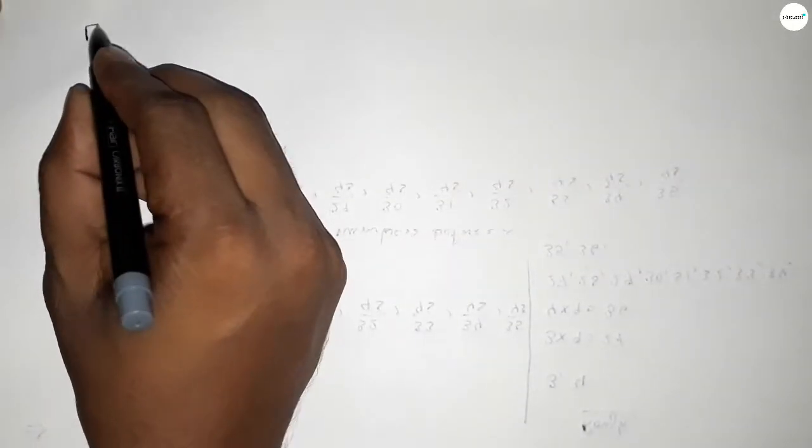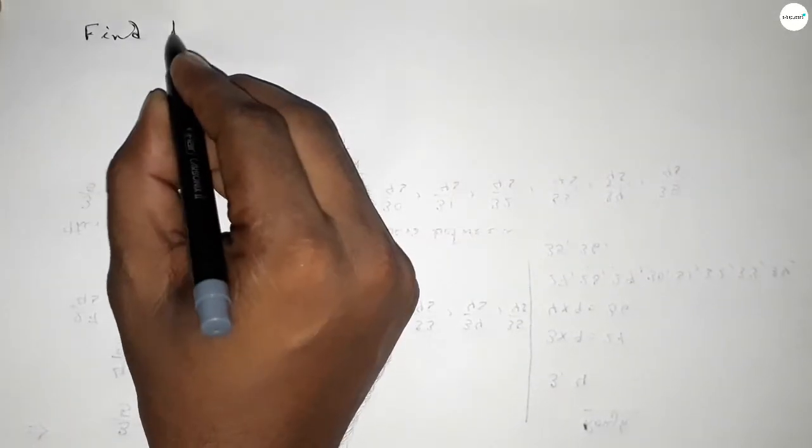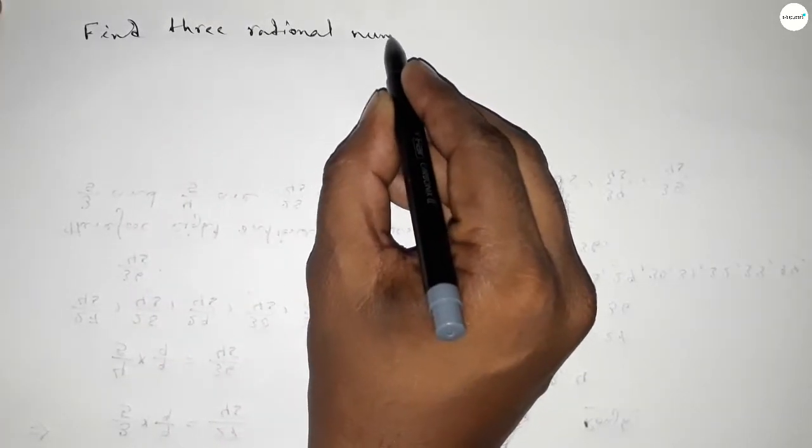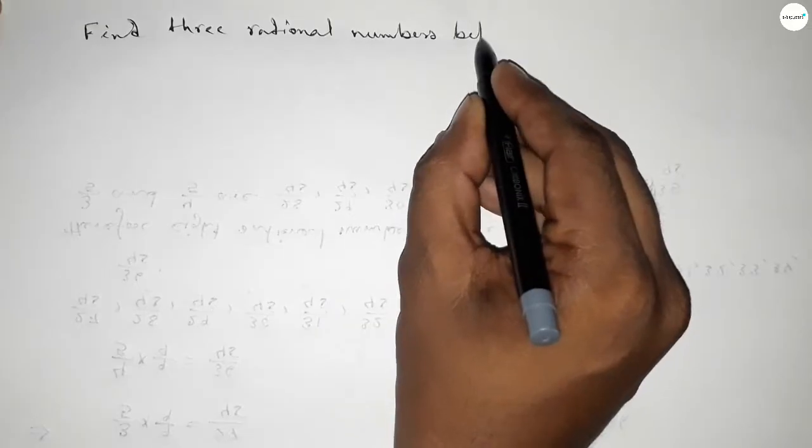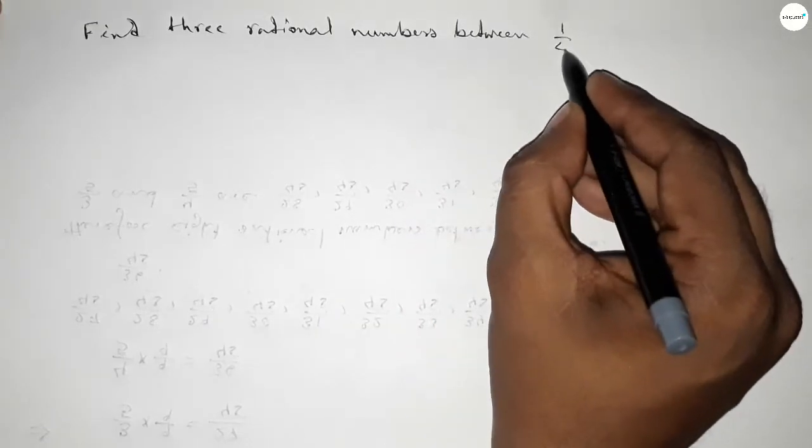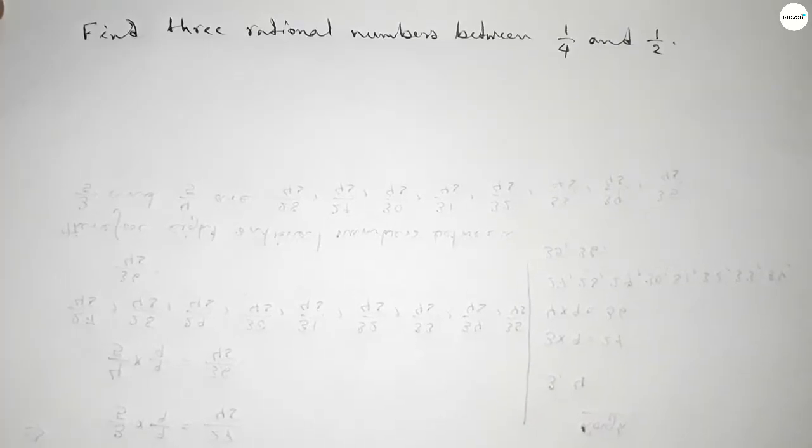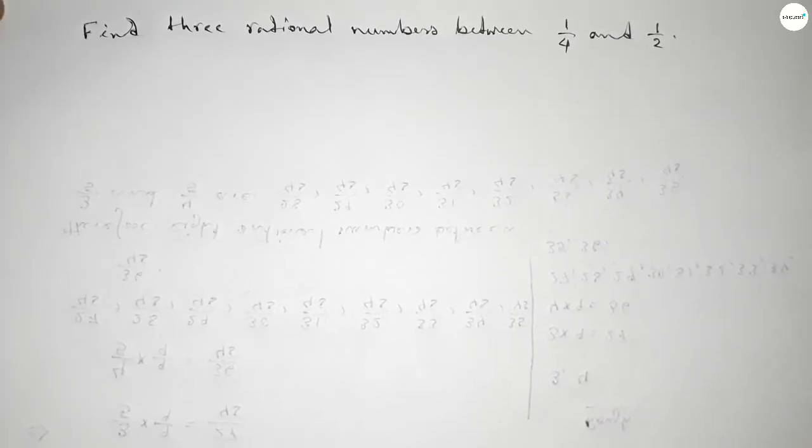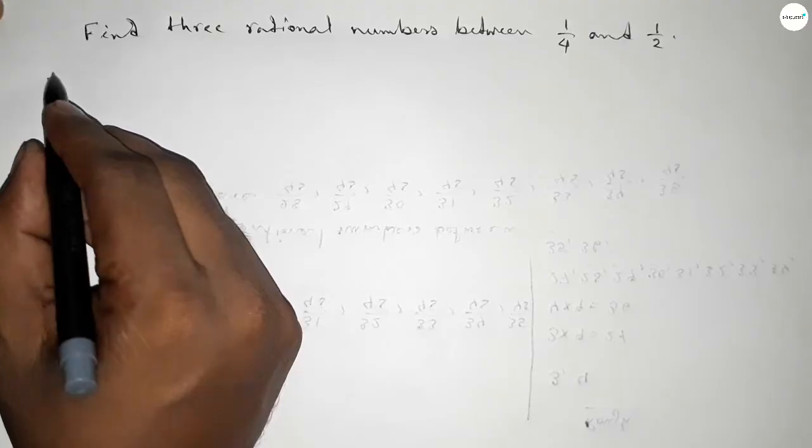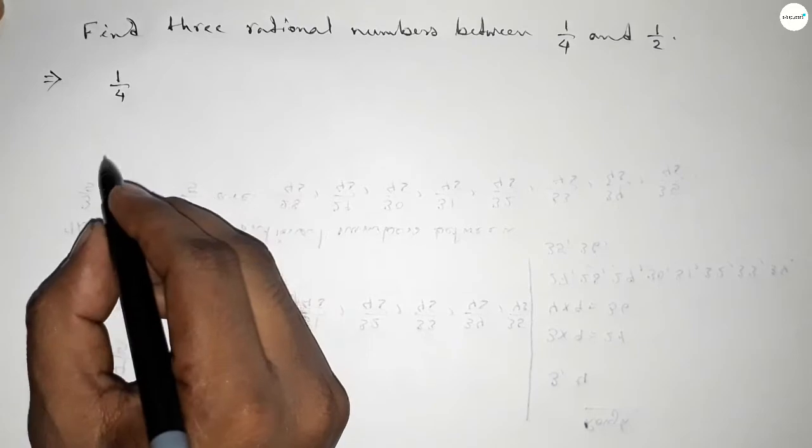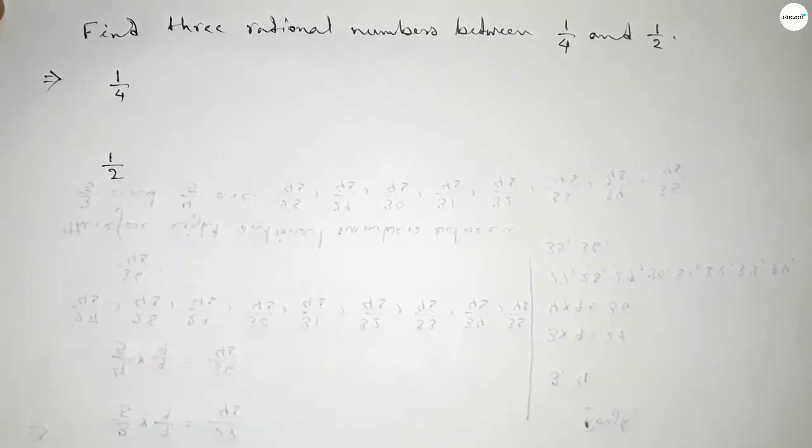Hi everyone, welcome to SSR Classes. Today in this video we have to find three rational numbers between 1 over 4 and 1 over 2. Let's start the video. First of all, write down the given numbers: 1 over 4 and 1 over 2.